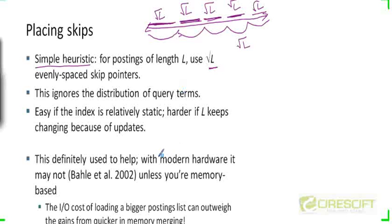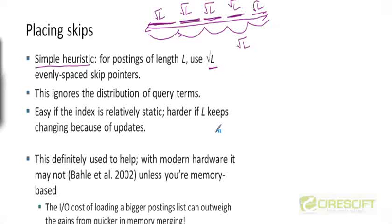Skip pointers used to help, but that was earlier. Recall from chapter 1 that if your index is small enough, it can entirely fit into memory — both the dictionary and the postings list. If your index is entirely in memory, using skip pointers will help, simply because you will end up doing fewer operations to traverse a postings list by following the skip pointers.